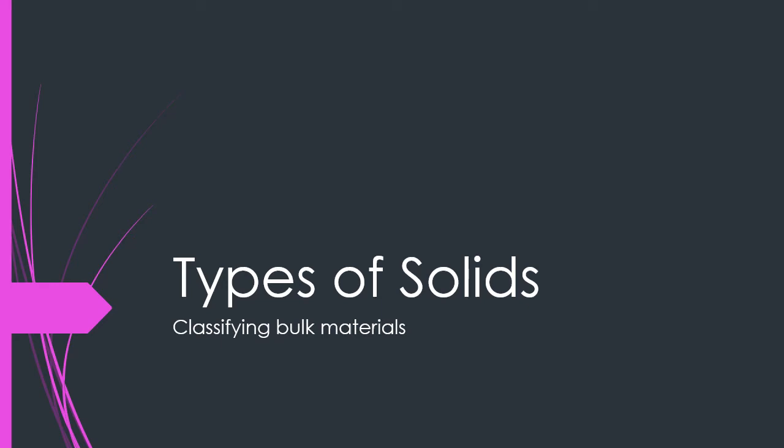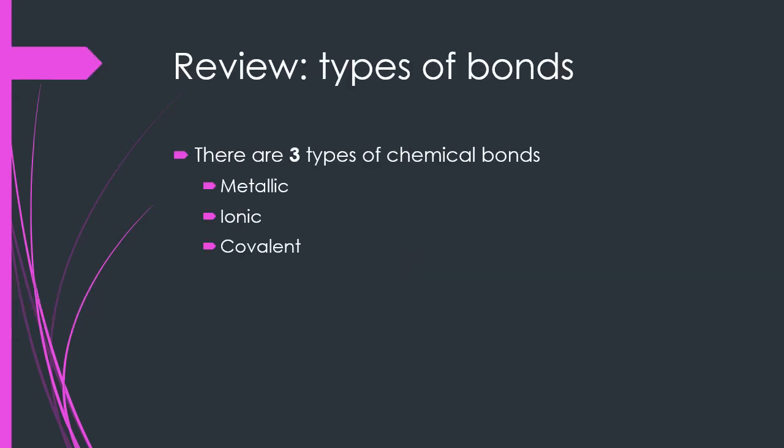Hello everyone, today we're going to talk about the different types of solids. A quick reminder — there are three types of chemical bonds that we have discussed: metallic bonds, ionic bonds, and covalent bonds.